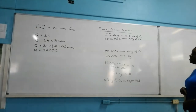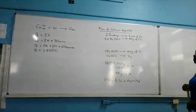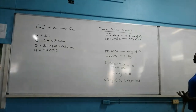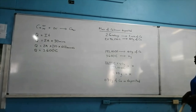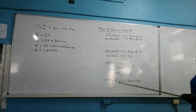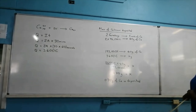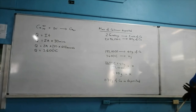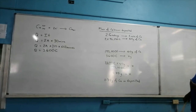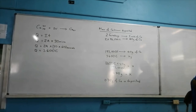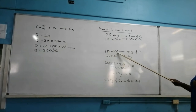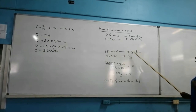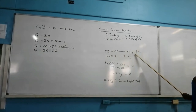To calculate the mass of calcium deposited, we consider how many Faradays of charge flow through the circuit. To deposit 1 mole of calcium atoms requires the passage of 2 Faradays through the circuit. So 193,000 coulombs would deposit 40 grams of calcium.